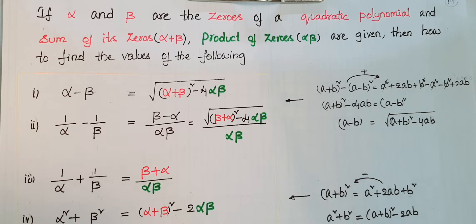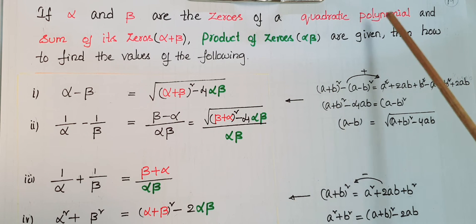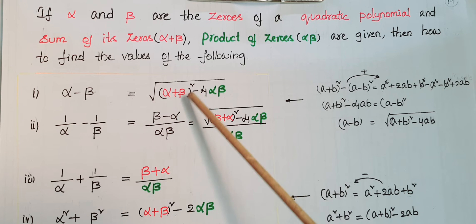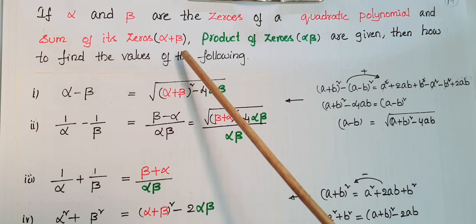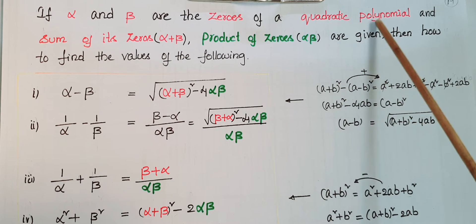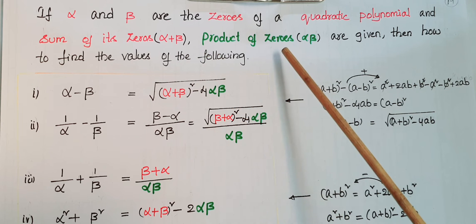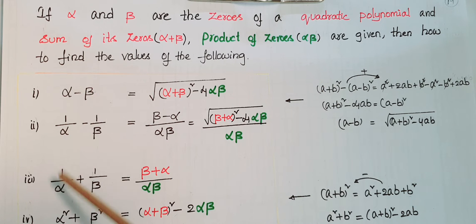Hello everyone. Today I am going to tell how to find the values of these types of expressions if alpha and beta are the zeros of a quadratic polynomial. First, we convert these expressions in terms of alpha plus beta and alpha beta, because we know how to find the sum of zeros: alpha plus beta is equal to minus b by a, and alpha beta is equal to c by a.